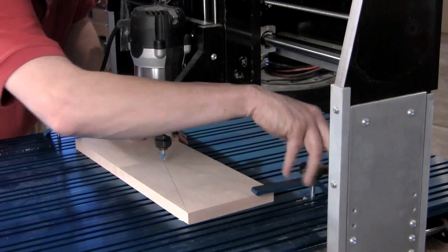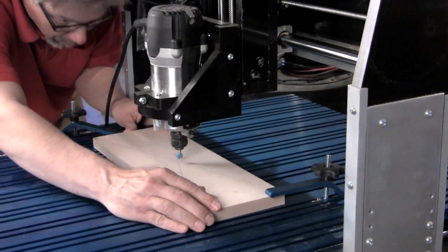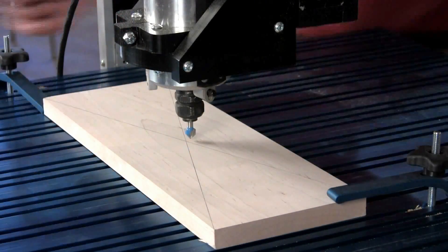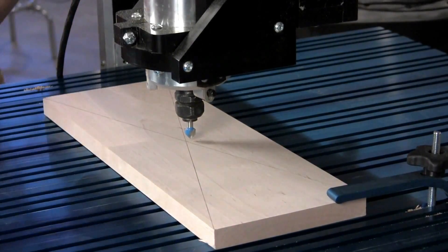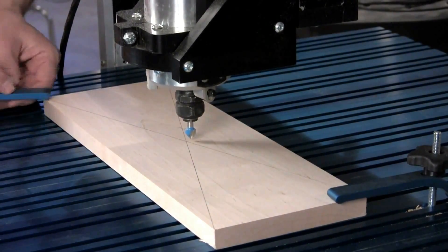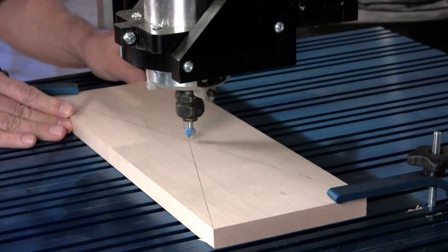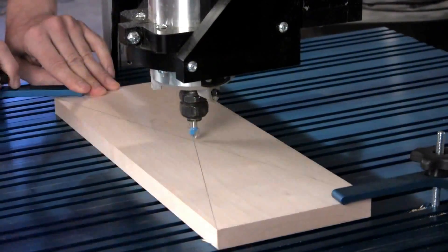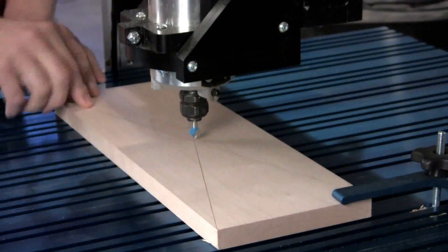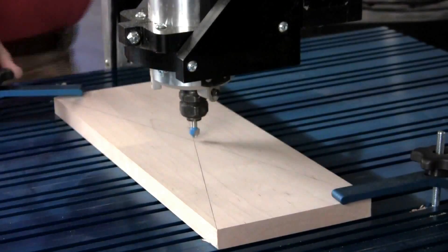Hold downs that run in these tracks are what keep this thing secured while you're going through the cutting process. In my case, I like to leave a little extra to trim just in case I get something a little wonky.